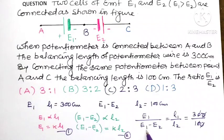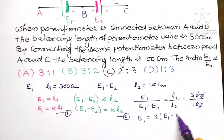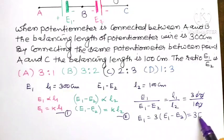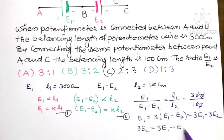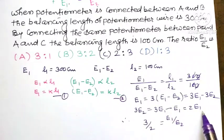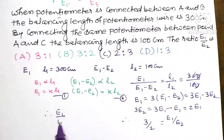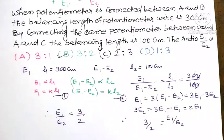Cancelling the zeros, we cross-multiply to get 3 times (E1 minus E2) equals E1. Expanding: 3E1 minus 3E2 equals E1. Taking terms across: 3E2 equals 2E1. Therefore, E1 divided by E2 equals 3 divided by 2. So the ratio E1 to E2 is 3/2, and the correct option for this question is option B, 3 divided by 2.